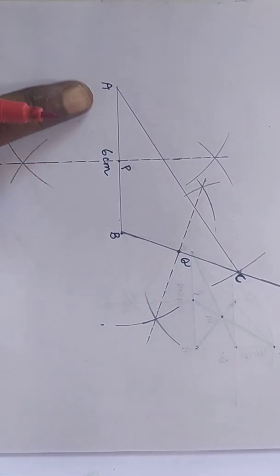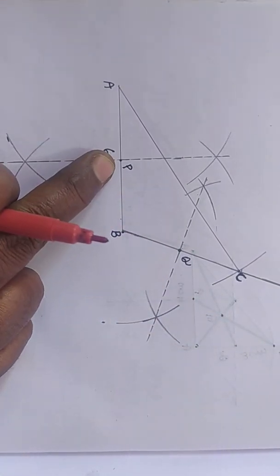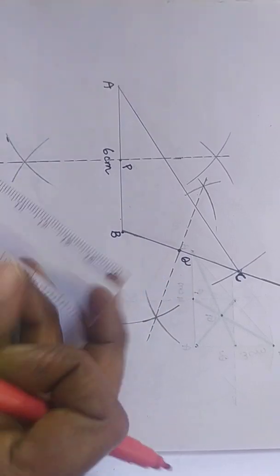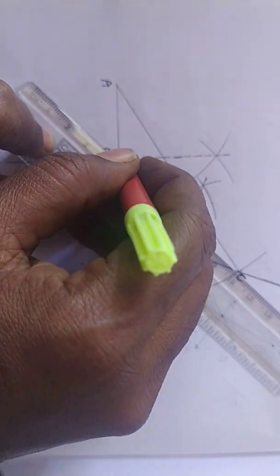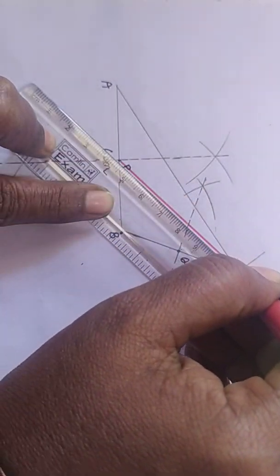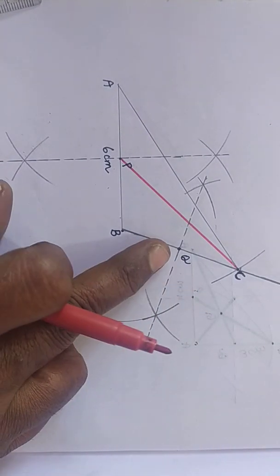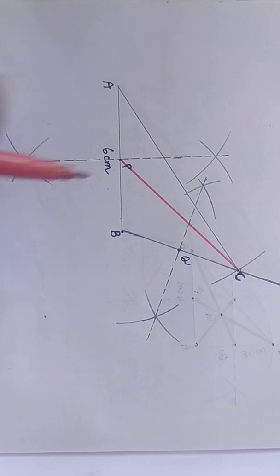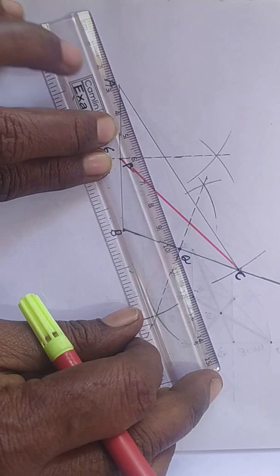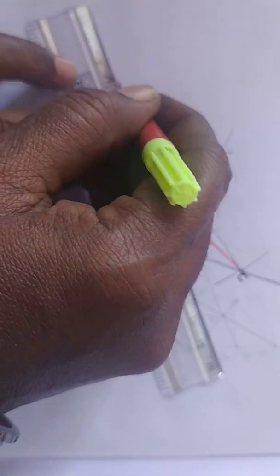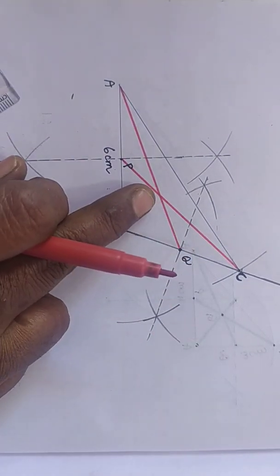Now we got the midpoint for AB and BC. Join the midpoint of AB with the opposite vertex C. This is one median. In the same way join the midpoint of BC, that is Q, with the opposite vertex A. Now you got another median. The meeting point of these two medians is the centroid of the triangle.